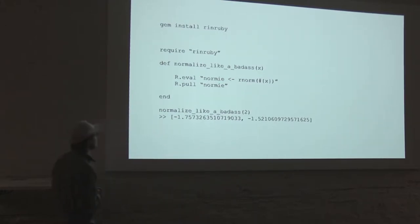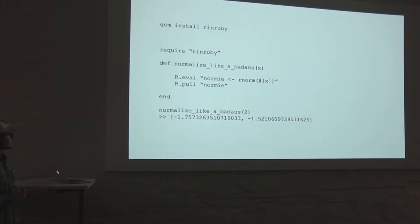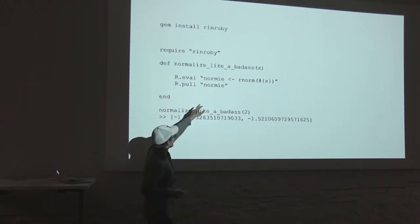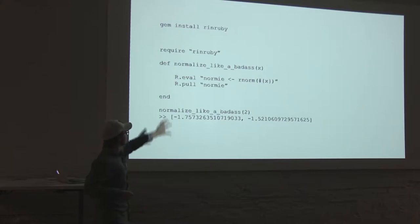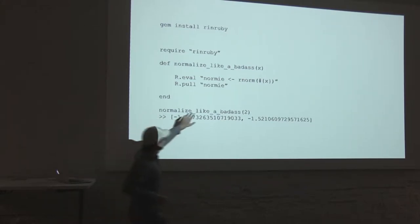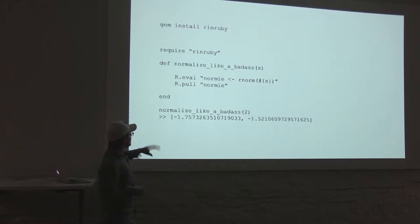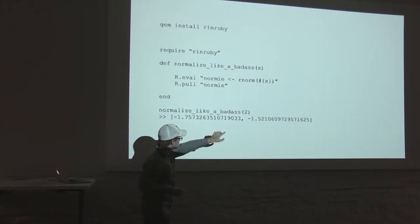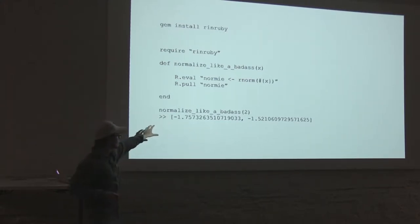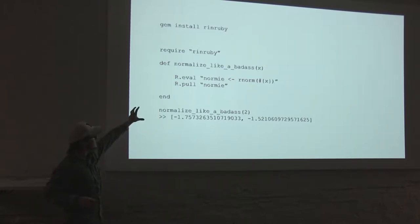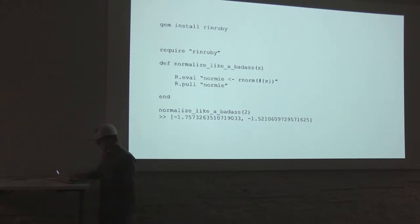For example, if you want to normalize a number, you do an eval statement. R.eval is actually saying 'run this R code.' We do a variable assignment to 'normie,' we pull out 'normie,' and that comes out as an array in Ruby — not an RinRuby object, but an actual array that was calculated using R, which is pretty handy.